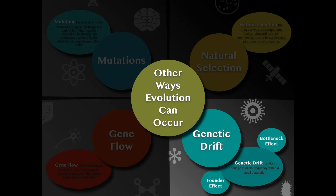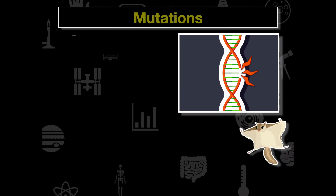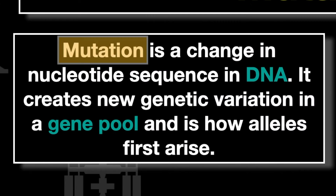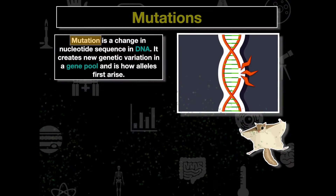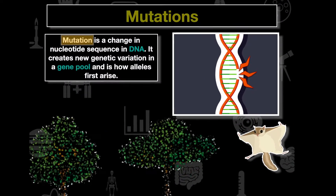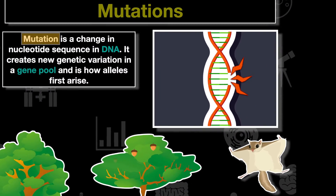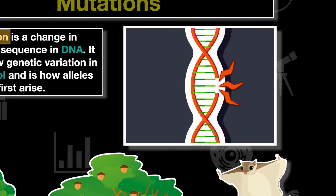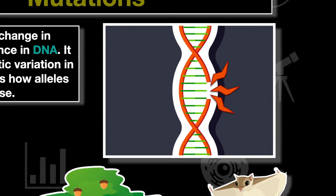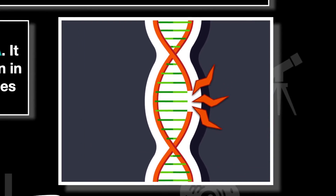A mutation is a change in the nucleotide sequence in the DNA. It creates new genetic variation in a gene pool and is how new alleles first arise. This results in very specific changes among species and organisms, assuming that the new allele is beneficial for the population.